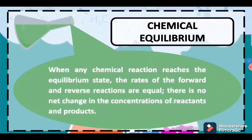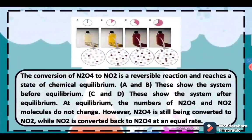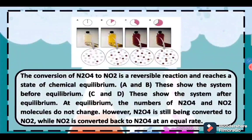When any chemical reaction reaches the equilibrium state, the rates of the forward and reverse reactions are equal. There is no net change in the concentrations of the reactants and products. Here is the example of the conversion of N2O4 to NO2. Illustrations A and B show the system before equilibrium, and illustrations C and D show the system after equilibrium.